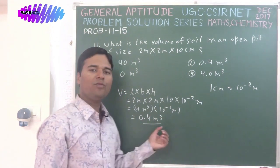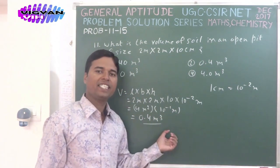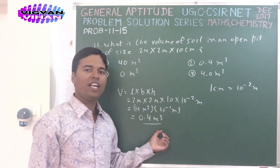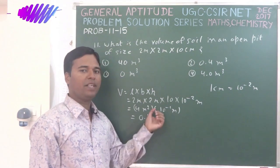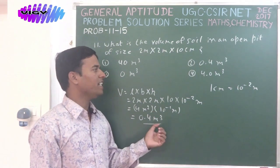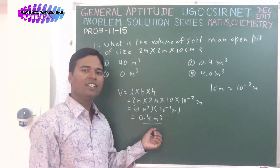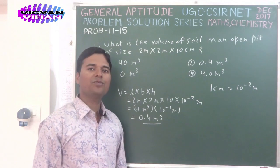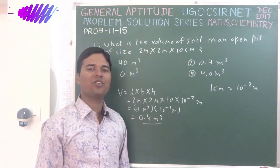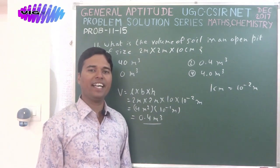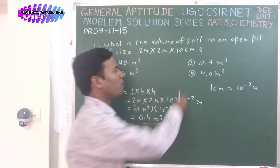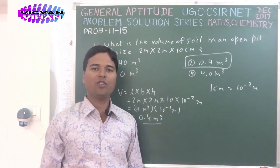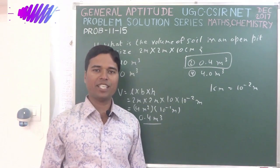The volume of the pit and therefore the volume of soil in this pit is 0.4 m³. So the correct answer of this problem is option 2: 0.4 m³.